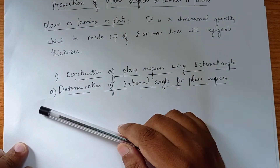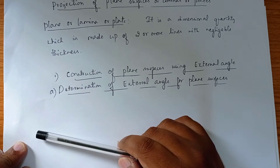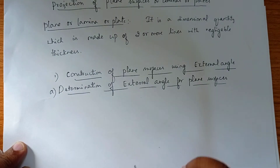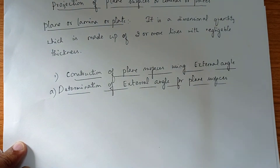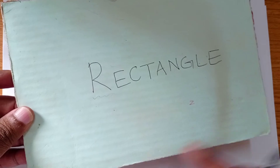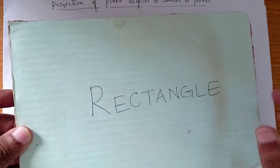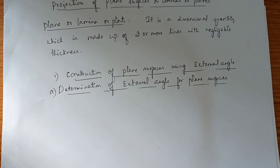A plane is a 2D quantity which is made up of two or more lines with negligible thickness. For example, a triangle is formed by three lines, and a rectangle is formed by four lines, both with negligible thickness. That is how we define a plane.